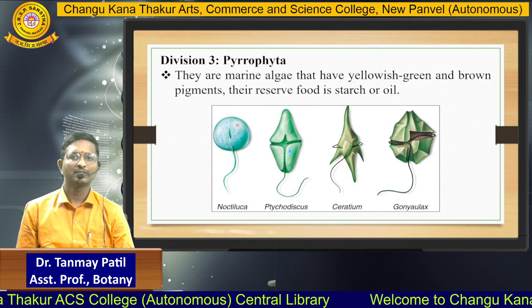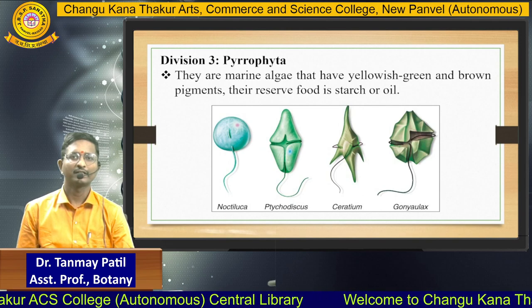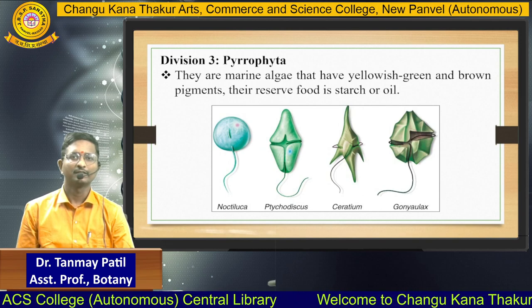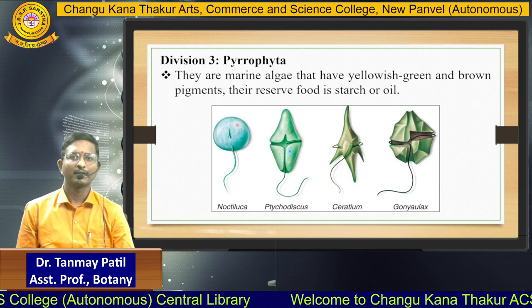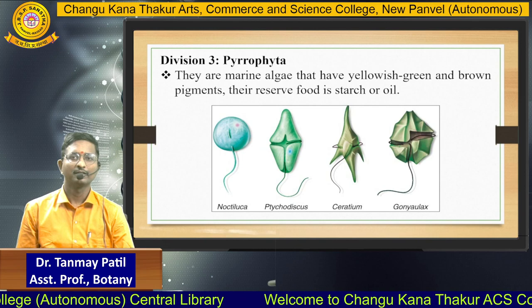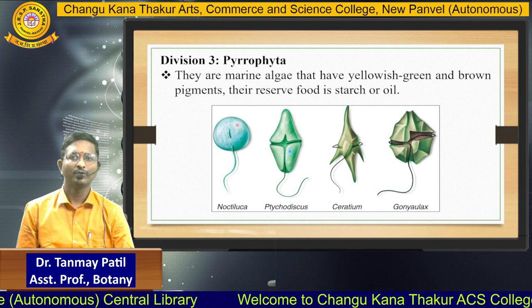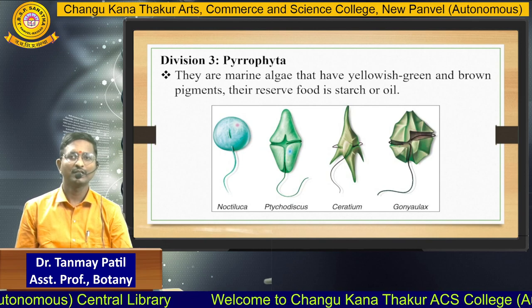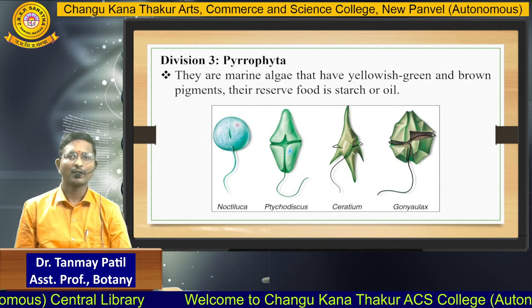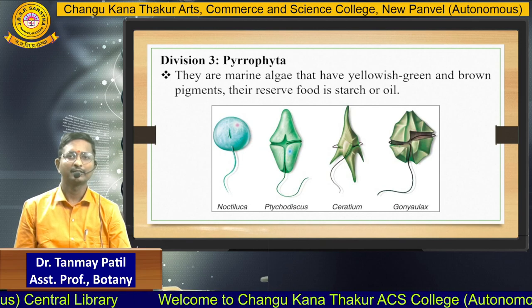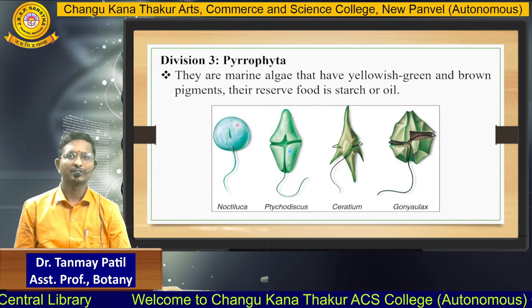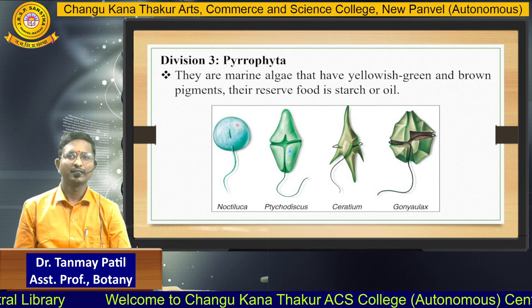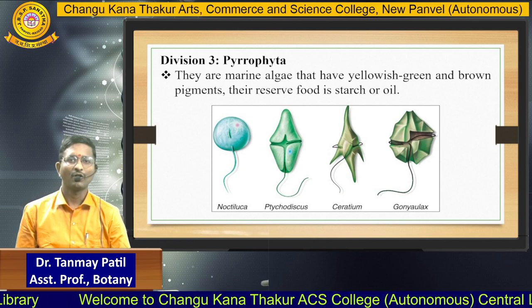The next division is Pyrophyta. They are marine algae that have yellowish-green and brown pigments, and their reserve food is starch or oil.